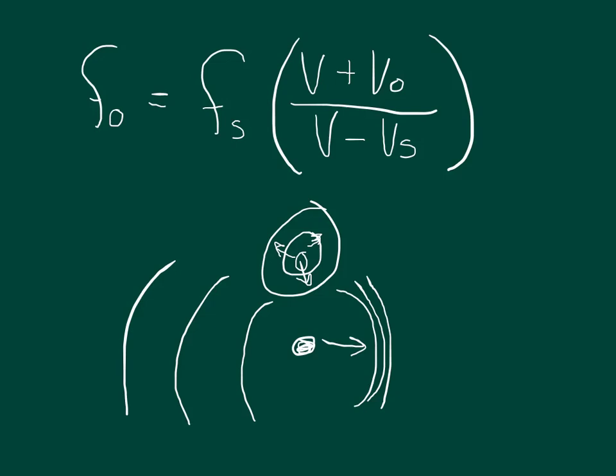When the waves are all traveling at the same speed, whenever they're further apart, that's a lower frequency. Whenever they're closer together, that's a higher frequency. Frequency meaning I see more of them in any given unit of time — when they're farther apart, I see fewer; when they're close together, I see more.